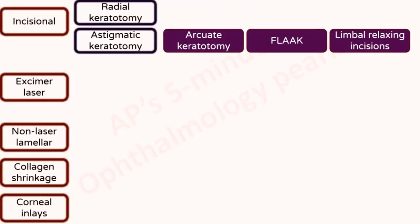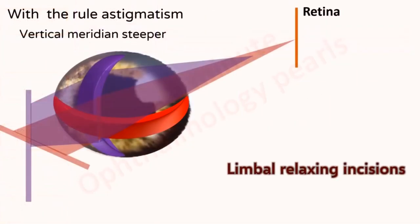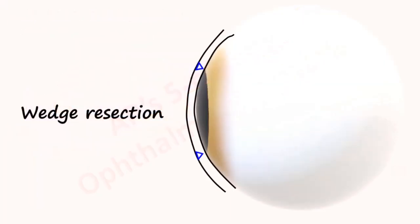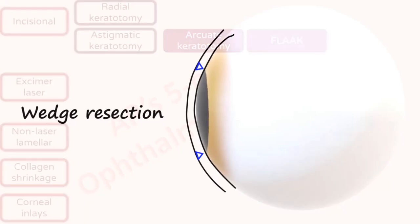Limbal relaxing incisions are incisions similar to arcuate keratotomy but of lesser depth, made near the limbus, usually in conjunction with cataract surgery to reduce the amount of preoperative astigmatism. Wedge resection is another type of surgical procedure where large amounts of astigmatism, typically greater than 10 diopters, can be corrected. This is usually required following the large astigmatism that follows keratoplasty.